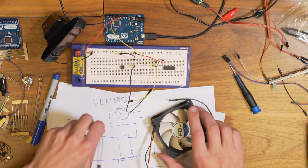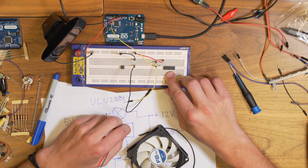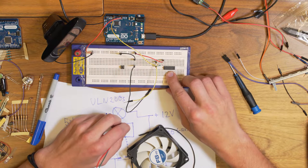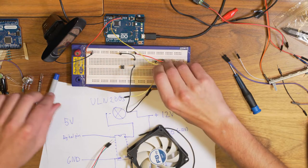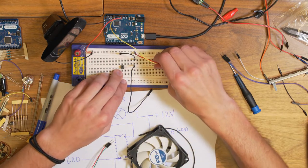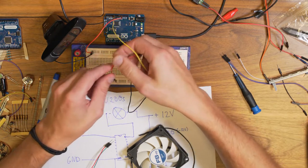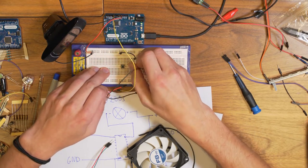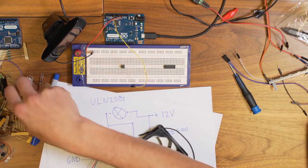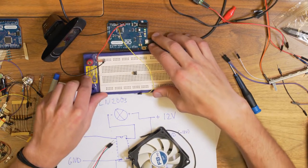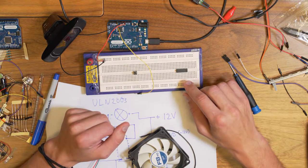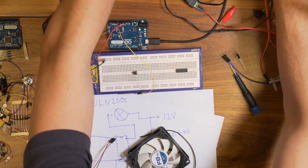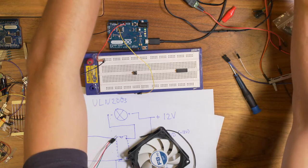And in this case, we will use this one, the ULN 2003. This chip can talk on one side with the Arduino and the pins on the Arduino. And on the other side with greater voltages.